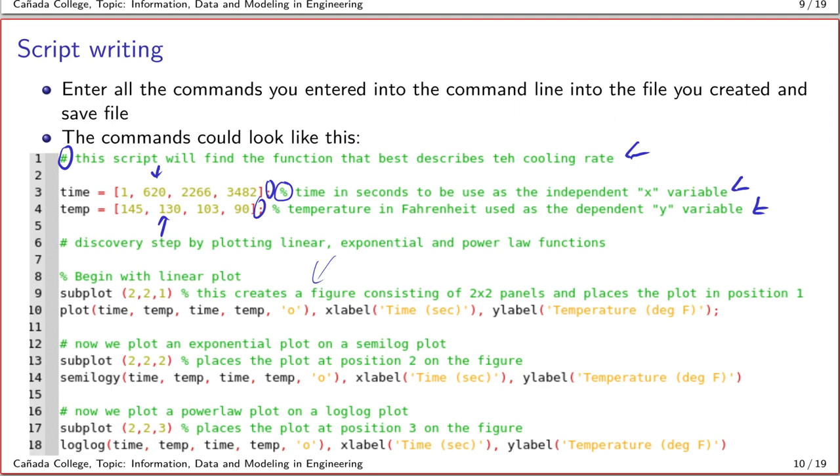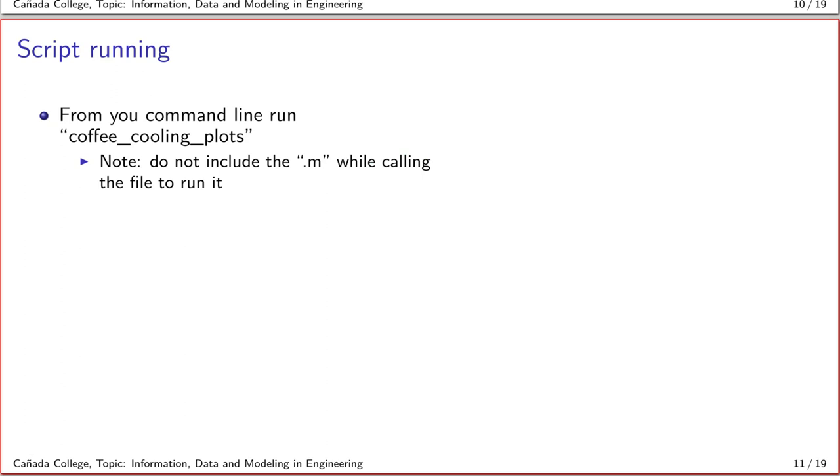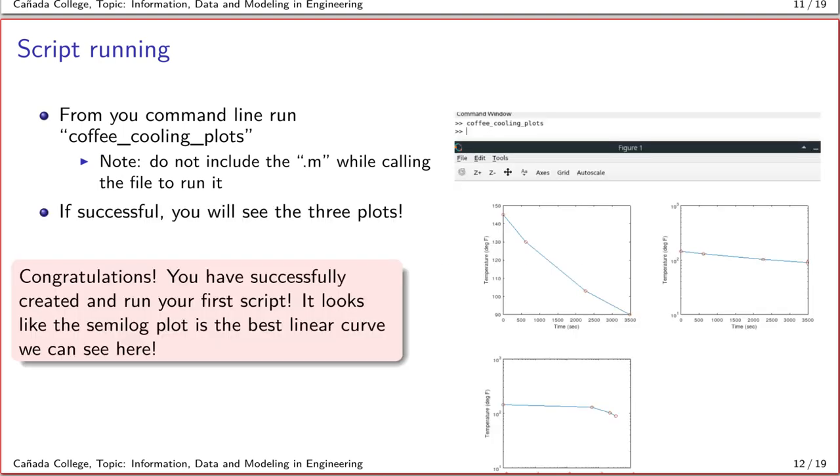Then I begin by creating my linear plot as shown here, followed by the semilog plot and the log-log plot. If you do this successfully and then go back to your command line and run the file name coffee_cooling_plots—make sure you don't include the .m when calling the file name—if everything was successful, you should be able to see all three plots created.